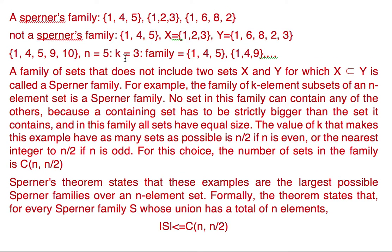Now we consider an example. The family of k element subsets of an n element set is a Sperner family. So this is an n element set where n is equal to 5. It is having 5 elements in total. And we take the value of k as 3. So we take all the three element subsets of this n element set.